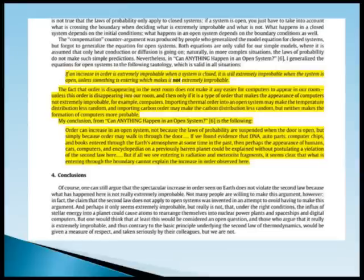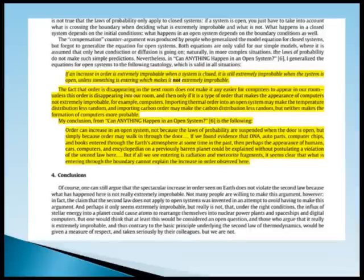Thus, the equations for entropy change do not support the illogical compensation idea. Instead, they illustrate the tautology that if an increase in order is extremely improbable when a system is isolated, it is still extremely improbable when the system is open, unless something is entering which makes it not extremely improbable. The fact that order is disappearing in the next room does not make it any easier for computers to appear in our room, unless this order is disappearing into our room, and then only if it is a type of order that makes the appearance of computers not extremely improbable — for example, if computers are entering.